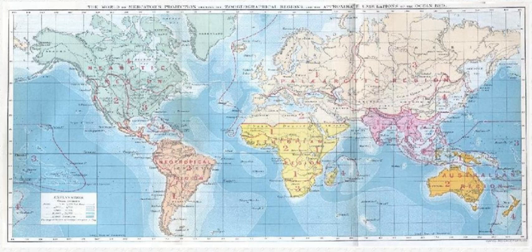Biogeography is the study of the distribution of species and ecosystems in geographic space and through geological time. Organisms and biological communities often vary in a regular fashion along geographic gradients of latitude, elevation, isolation, and habitat area.